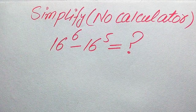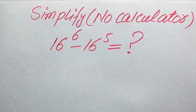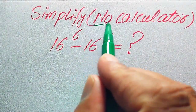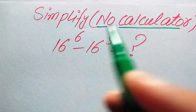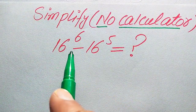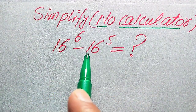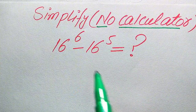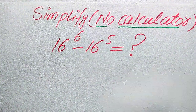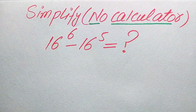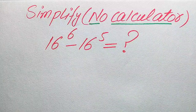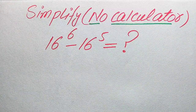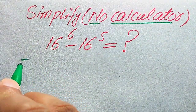Hello everyone. How to simplify this nice algebraic expression without using the calculator: 16 to the power of 6 minus 16 to the power of 5. We will write this algebraic expression in its lowest form.